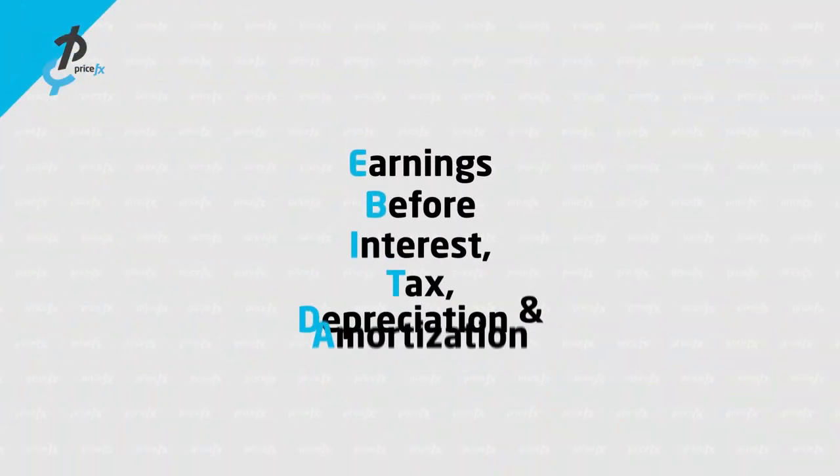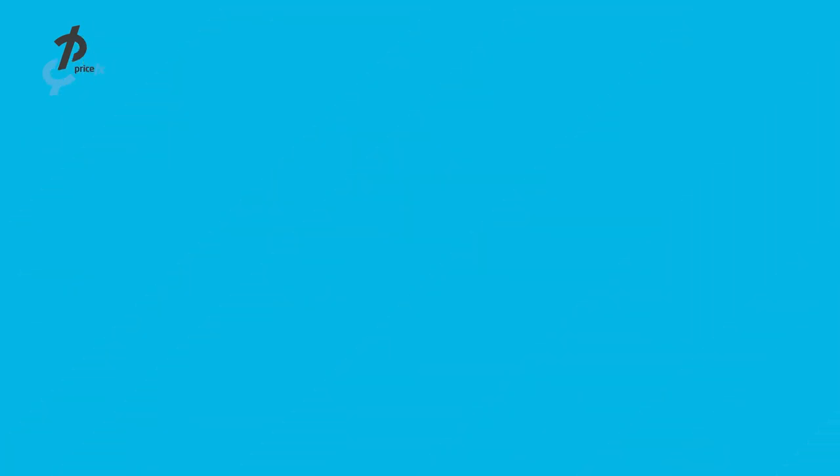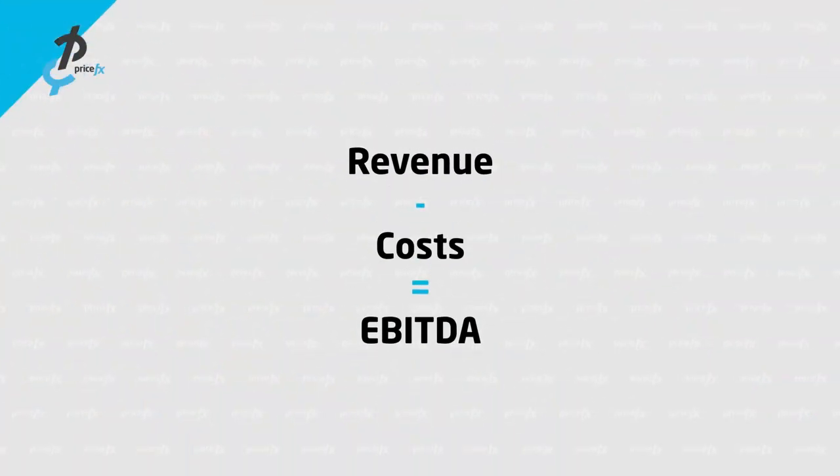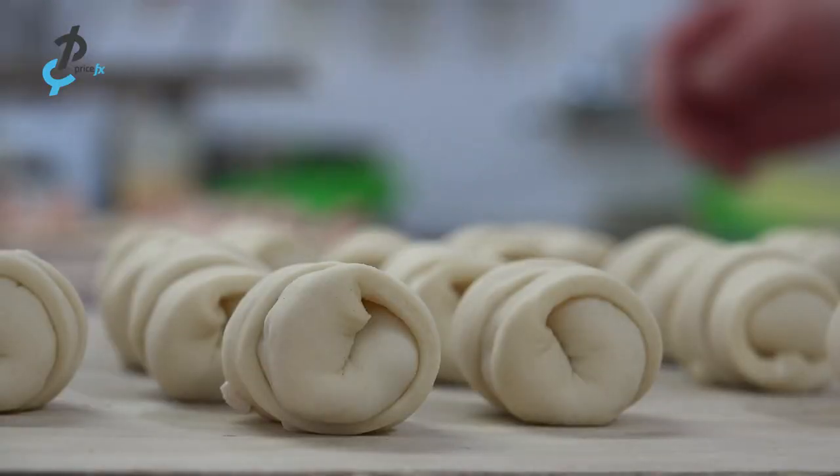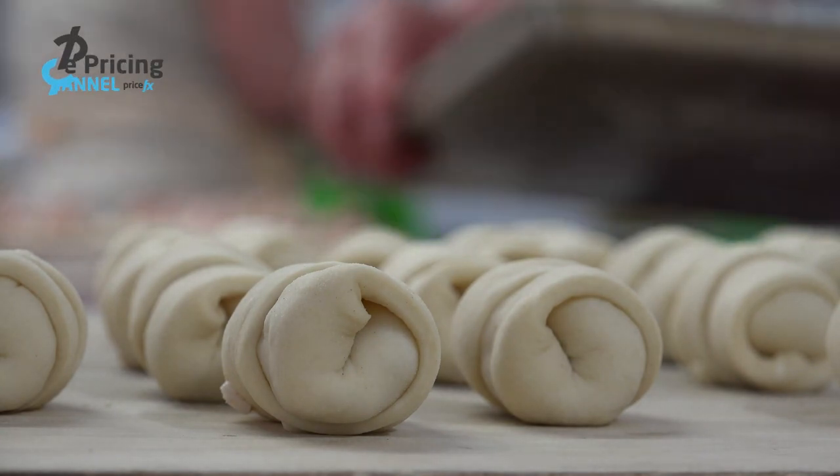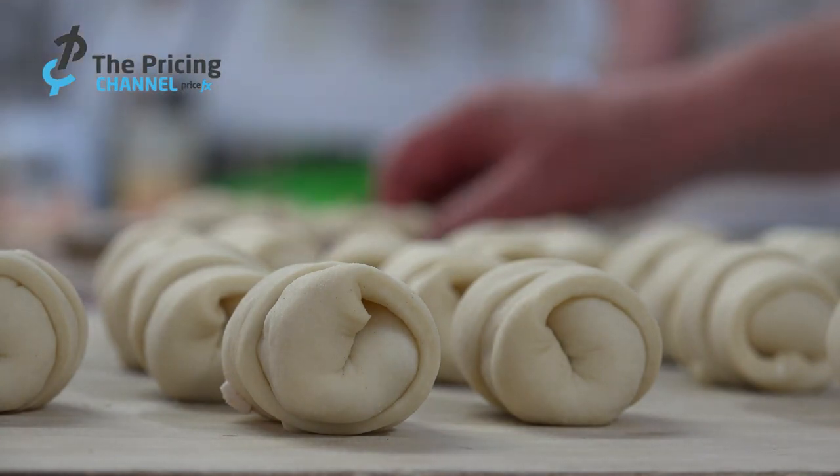What is EBITDA? EBITDA stands for Earnings Before Interest, Tax, Depreciation, and Amortization. It's a measure of profitability. Essentially, you take your revenues, you minus your costs, and you get EBITDA. But you minus a specific type of cost — your controllable and direct and indirect costs. For example, if you're selling cakes, your direct costs are your flour and your sugar.